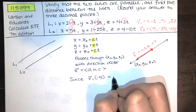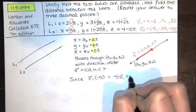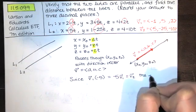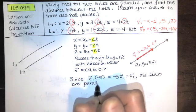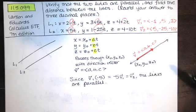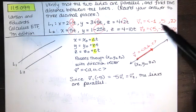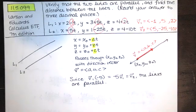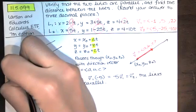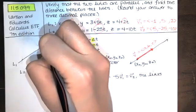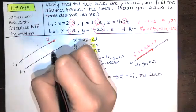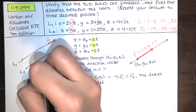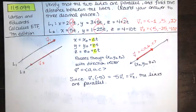Since we can take v1 and multiply it by negative five to get v2 — that is, v1 times negative five equals v2 — the two direction vectors are parallel to each other, which means the lines are parallel. The only difference is that v2 is five times as long and points in the opposite direction, but since they're parallel, the lines are parallel.